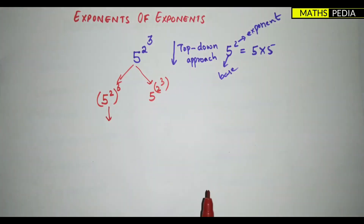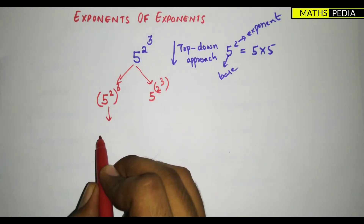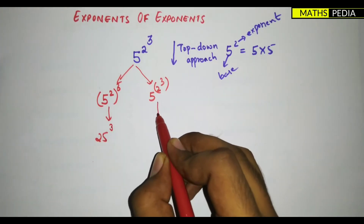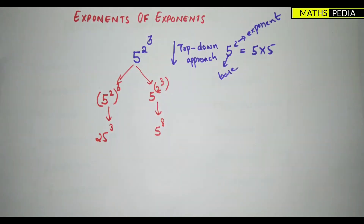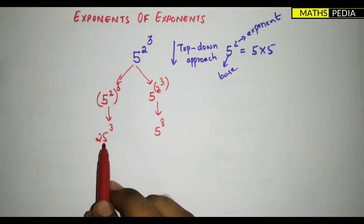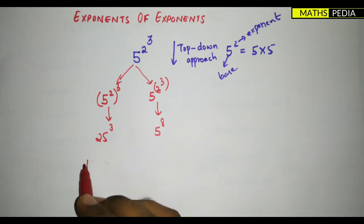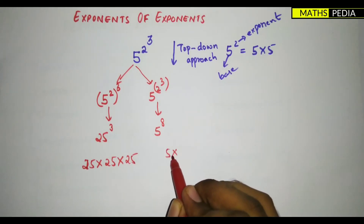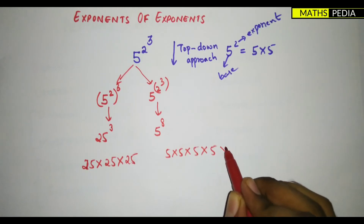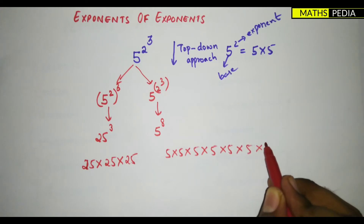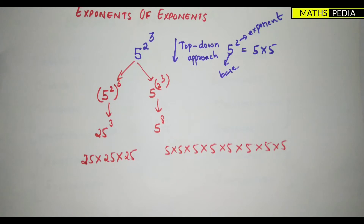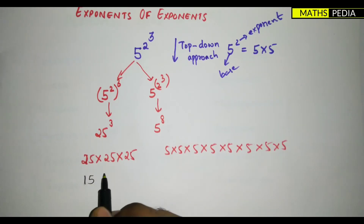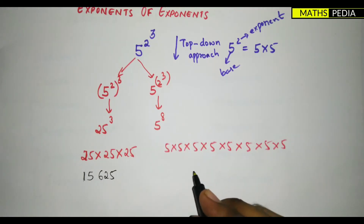Let me calculate by both methods. In the first method, (5²)³: 5 squared is 25, so it becomes 25 to the power 3, which means 25 × 25 × 25. In the second method, 5 to the power (2³): 2 cubed is 8, so it becomes 5 to the power 8, meaning multiply 5 eight times.